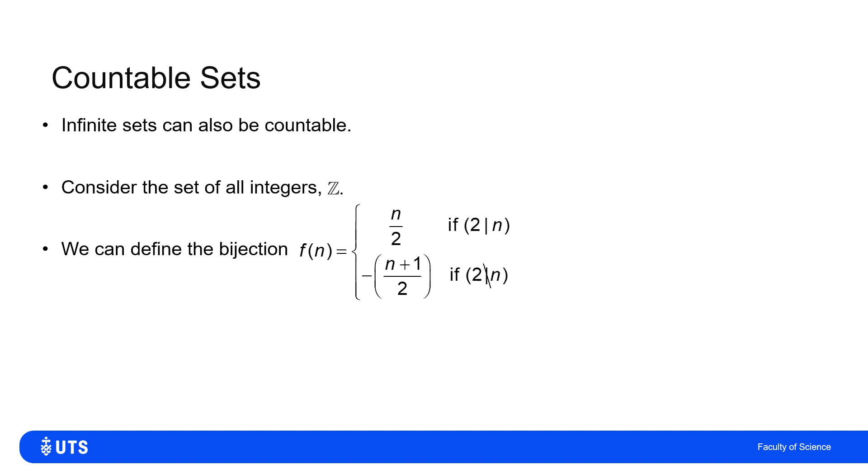Now I'm going to consider this bijection, which says, if I've got a number n: if n is even, then I'll halve it. So f(n) = n/2 if 2 divides n, and if 2 does not divide n, i.e. n is odd, I'll add 1 to it, then halve it, and take the negative of that.